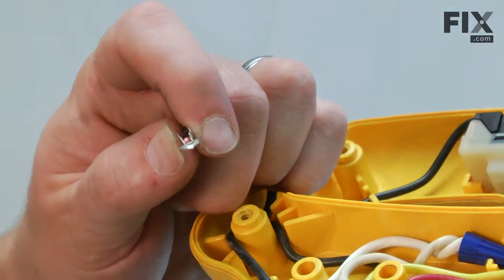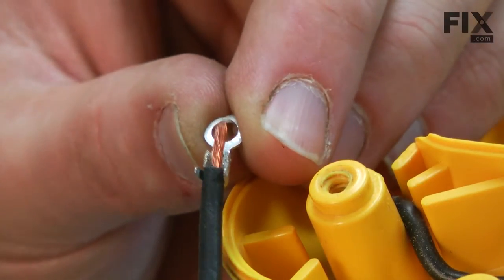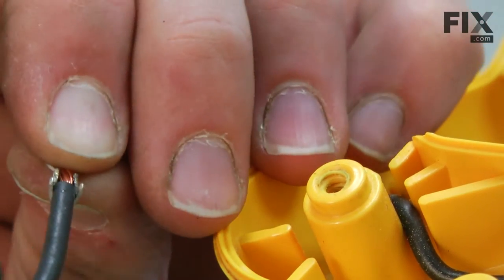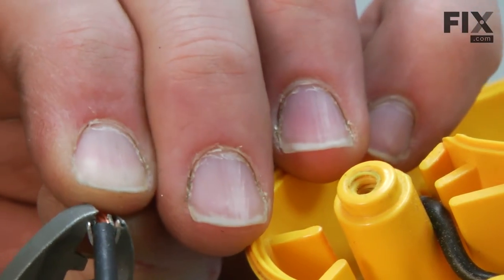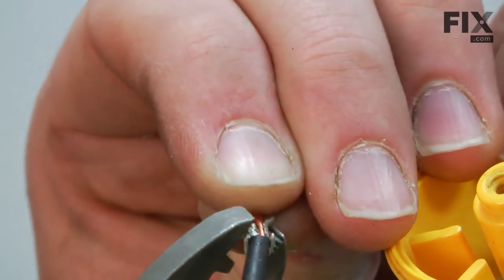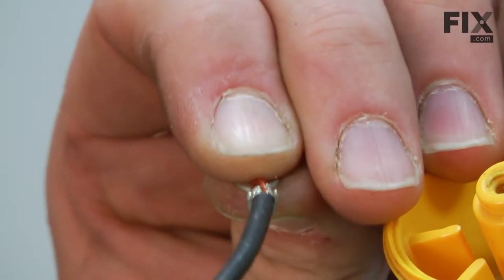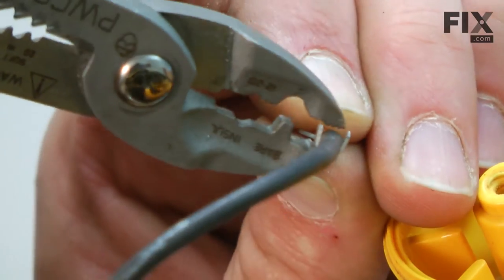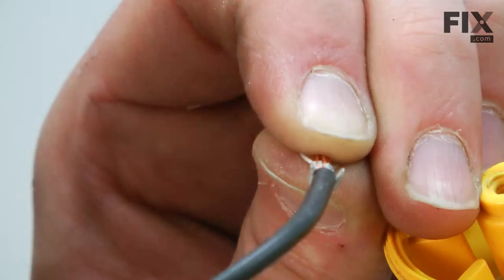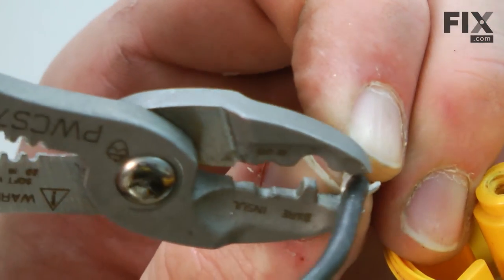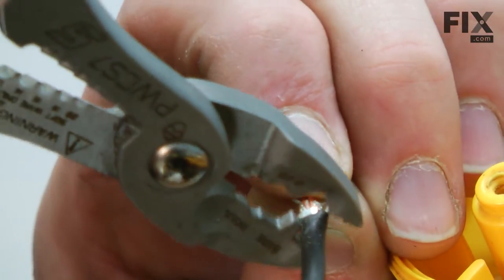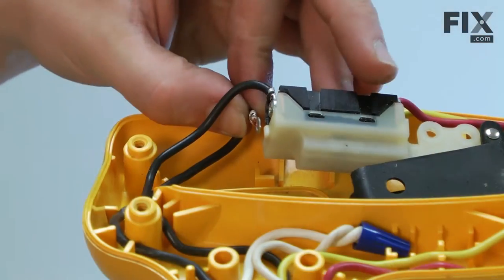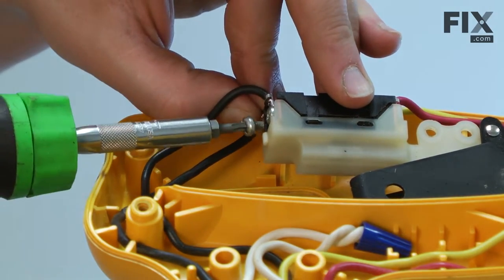Then I'll take my terminal, insert the wire into the terminal, and then crimp the upper portion around the wire. The lower portion of the terminal gets crimped around the wire insulation. Now, I can install the black wire back onto the switch.